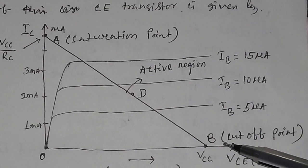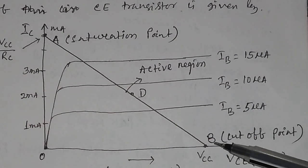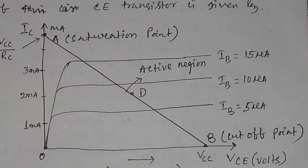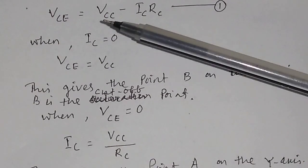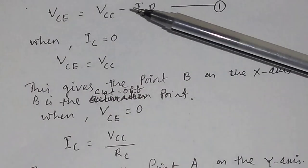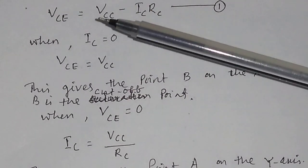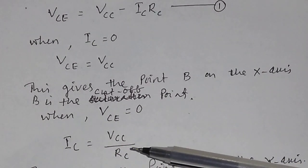This point B is called the cutoff point. For the cutoff point, your collector current IC, which passes through the load resistance RC, must be equal to zero. Again, from equation one, if VCE equals zero — that is the collector-emitter voltage equals zero — then the collector current IC will be equal to VCC divided by RC.